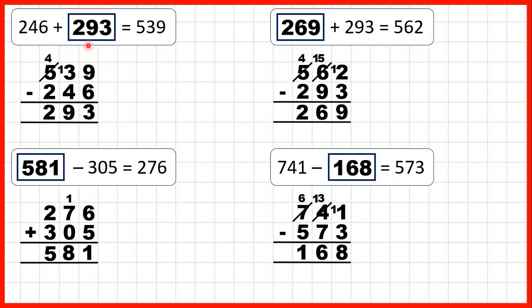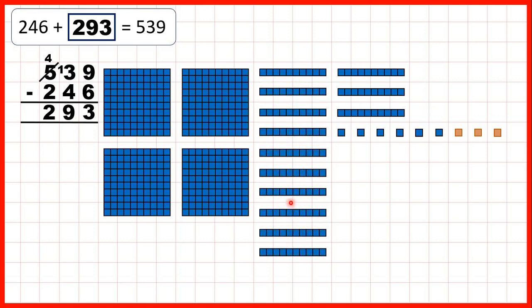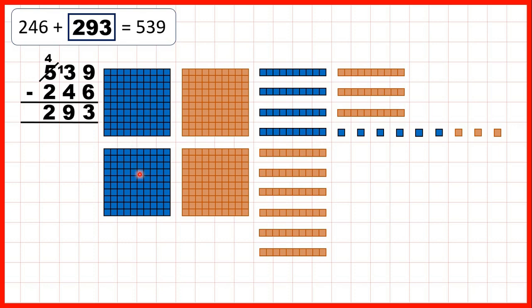Let's take a closer look at these questions. First, we had 246 plus something equals 539. Here we've shown 539, because we have 5 hundreds, 3 tens, and 9 ones. Now let's colour 3 ones, 9 tens, and 2 hundreds in red. We can colour 3 of our ones in red. We need to colour 9 tens in red, but we only have 3 tens, so let's exchange 1 of our hundreds for 10 tens. Then we can colour 9 in red, and we can colour 2 of our hundreds in red as well. If we only look at our blue blocks, we have 2 hundreds, 4 tens, and 6 ones. And if we look at our red blocks, we have 2 hundreds, 9 tens, and 3 ones. So that's why our missing number was 293.